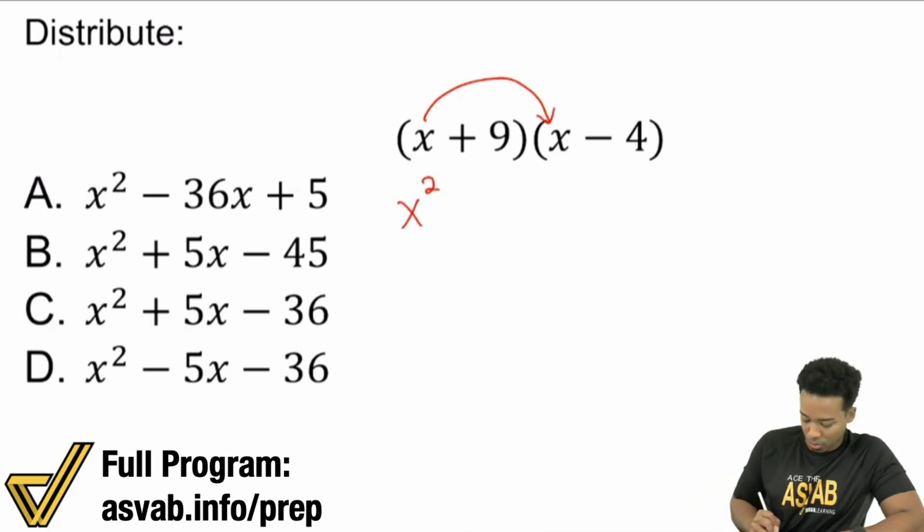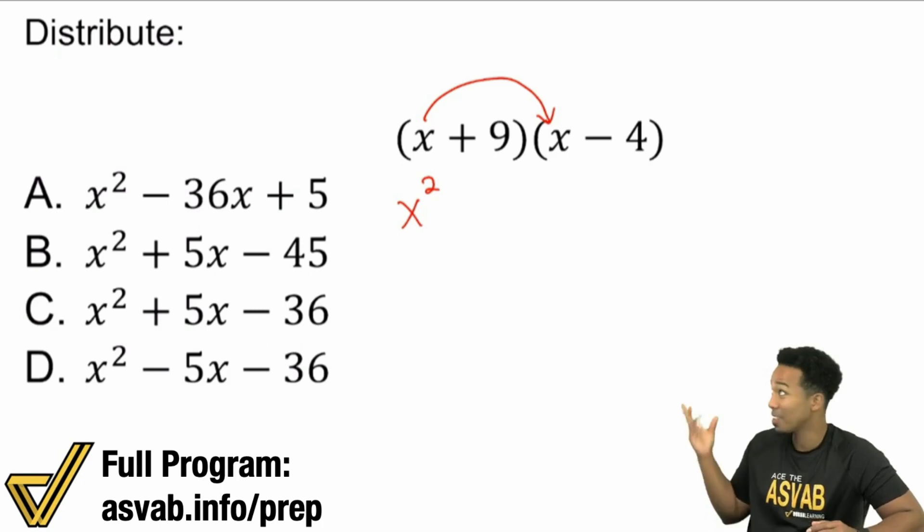x times x is x squared because anything times itself is squared. 5 times 5, 5 squared. 10 times 10, 10 squared. x times x, x squared.